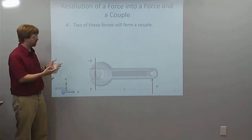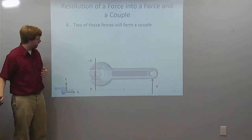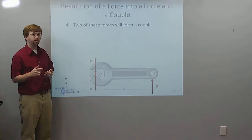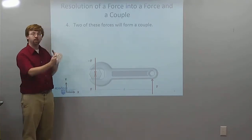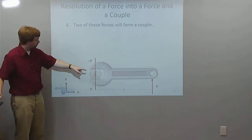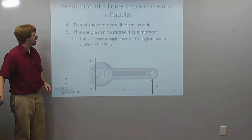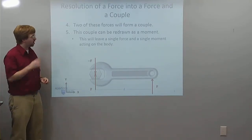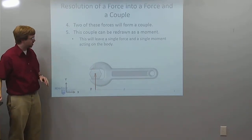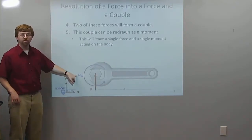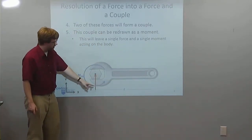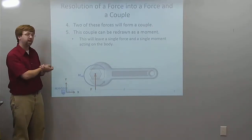The reason we do this is that two of these forces will form a couple. If I look at negative F over here and the original F over here, they are equal in magnitude, opposite in direction, and they are not collinear — they're offset by some degree — and that's going to exert a moment, the same moment about any point. We take those two forces — negative F and the original F — and redraw them as a moment. This leaves us with a single force F at the new point, plus a moment. So I've gone from my original force acting over there, to a force acting at this new point, and this moment from the couple acting about that point.